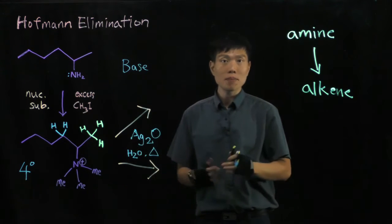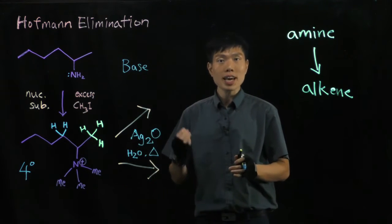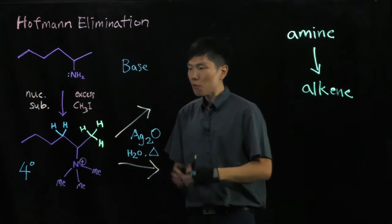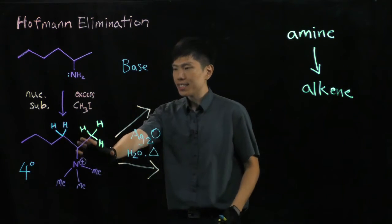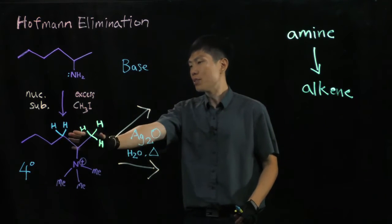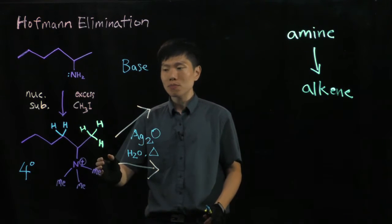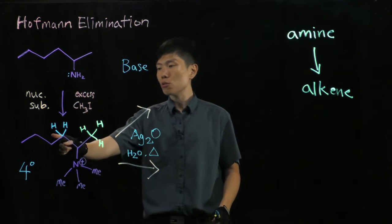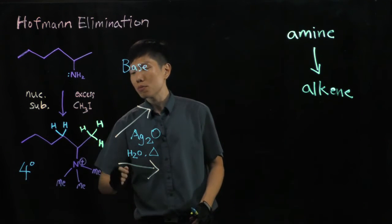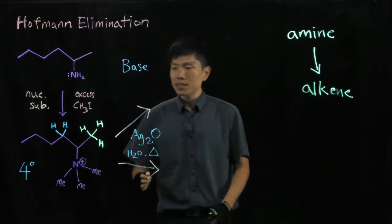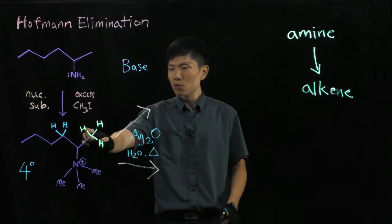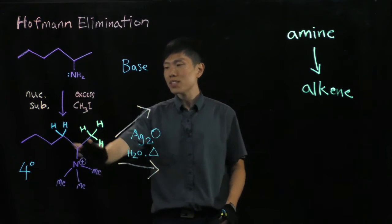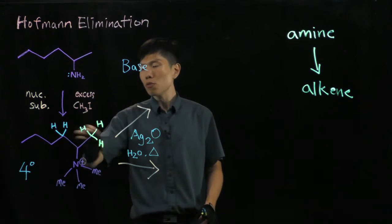What does a base do? A base picks up H-plus, or hydrogen. Now if you look at this structure here, there are two potential sides from which this H could come off — the one that's in green, and the one that is in blue. You see three identical ones in green, and two in blue.